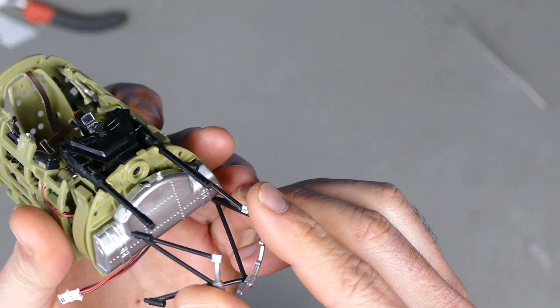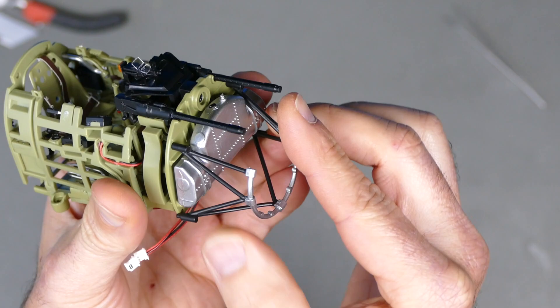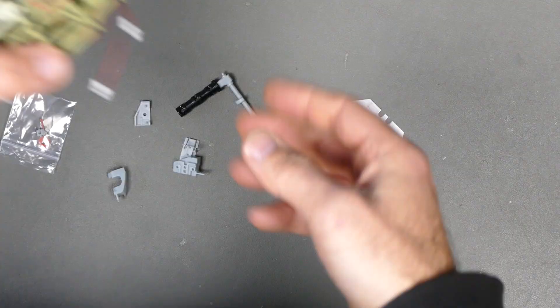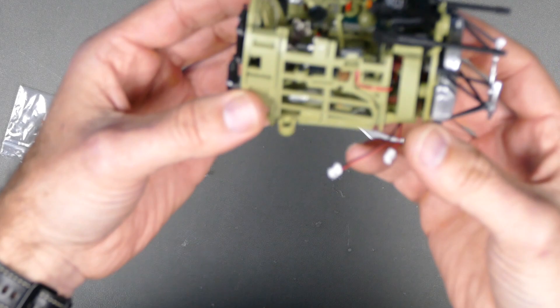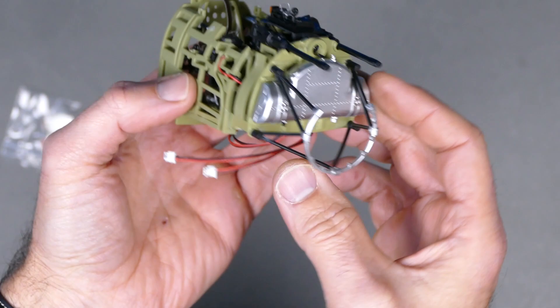And then all we need to do is attach, this is the engine mount. Just says to glue that bad boy in. One, two, three, four lugs. And that is it for that particular stage. So stage 27 is all completed. Check out that beauty. Looks stunning.